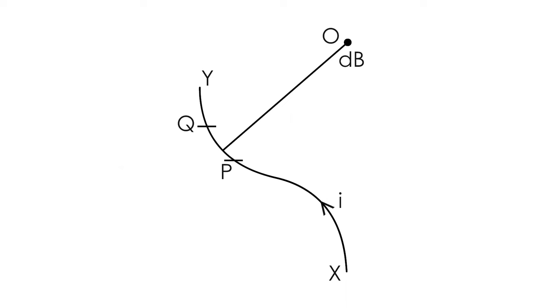The field is directly proportional to the length of the element DL, directly proportional to the sine of the angle θ between the element and the line joining the element to the point, and inversely proportional to the square of the distance R between the element and the point.